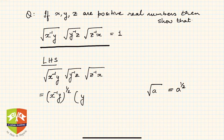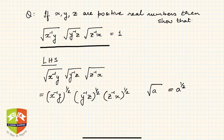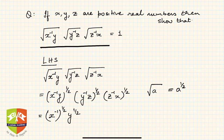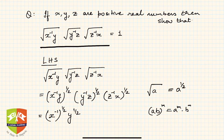Next is y to the power minus 1 times z to the power half, and z to the power minus 1 times x to the power half. Now we can separate the powers on both variables in each term. The rule being used here is: (ab)^m = a^m × b^m.